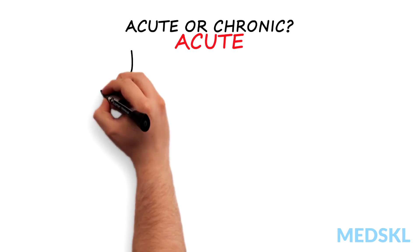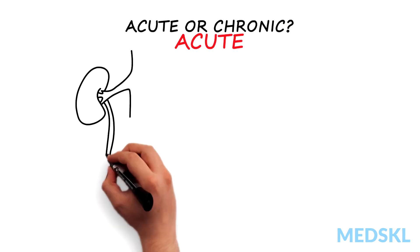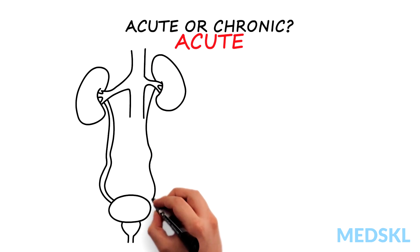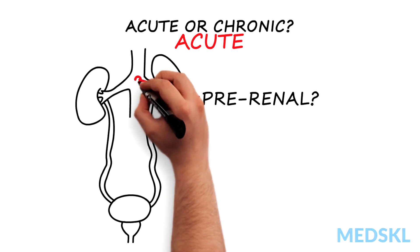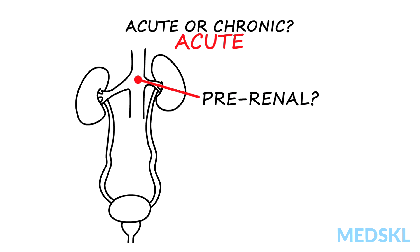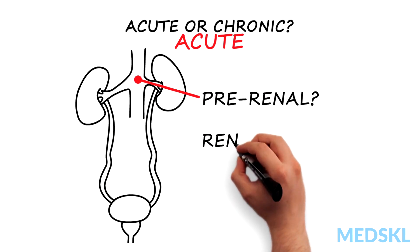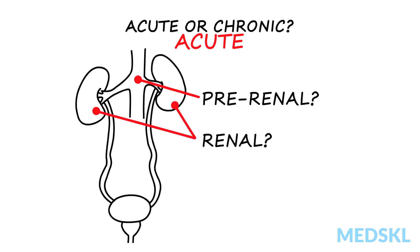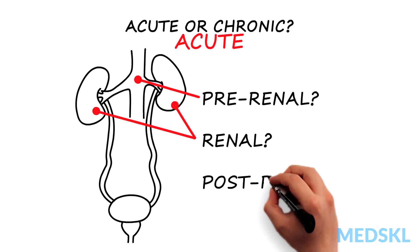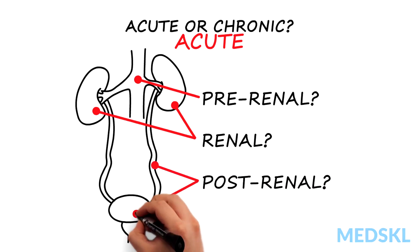Next, if this is ARF, is it: 1. Pre-renal — decreased renal blood flow but no structural or functional renal damage; 2. Renal — damage to glomeruli or renal tubules such as ATN, RPGN, or AIN; or 3. Post-renal — obstruction of ureters.